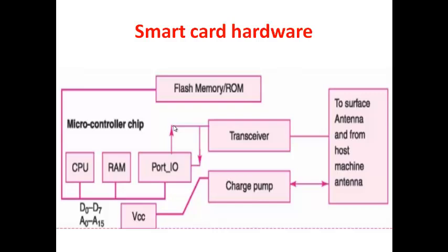The hardware inside a smart card includes a CPU, RAM (memory where contents are stored), input/output ports (where data is transferred in or out), and a transceiver — an IC used to both transmit and receive data. Like a port in a harbor that loads and unloads ships, the I/O port transfers data in and out of the smart card.